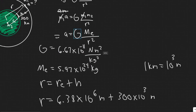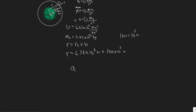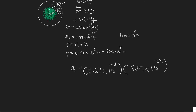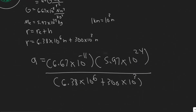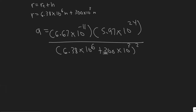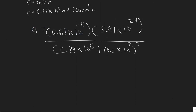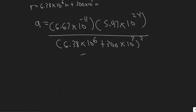To find the acceleration due to gravity experienced by our astronaut, we plug everything in: G is 6.67 times 10 to the minus 11, the mass of the Earth is 5.97 times 10 to the 24, divided by r squared — that is (6.38 times 10 to the 6 plus 300 times 10 to the 3) squared. If you go ahead and compute this, you get approximately 8.924 meters per second squared.